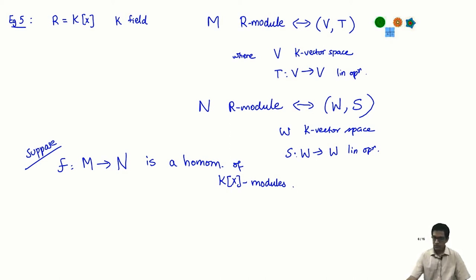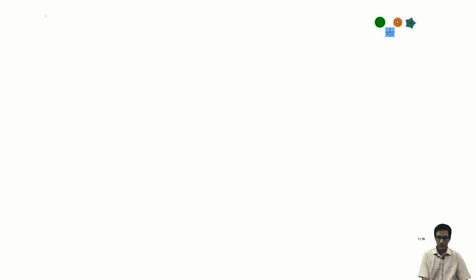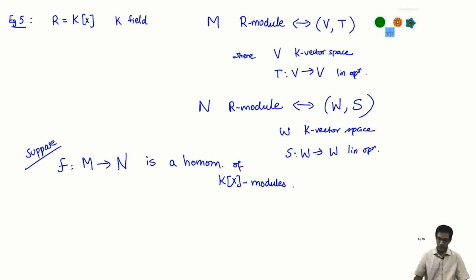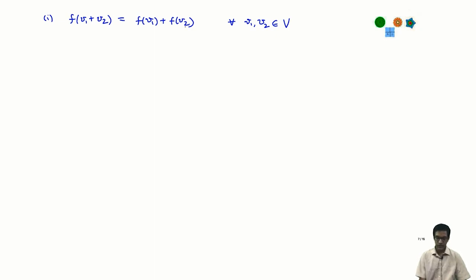So a K[X]-module homomorphism F from M to N means two things. First, F(V₁ + V₂) = F(V₁) + F(V₂) for all V₁, V₂ in V — the additivity property. Second, F(r · V) = r · F(V) for all scalars r in K[X] and all V in V. Let us analyze what the second property means by considering special cases.